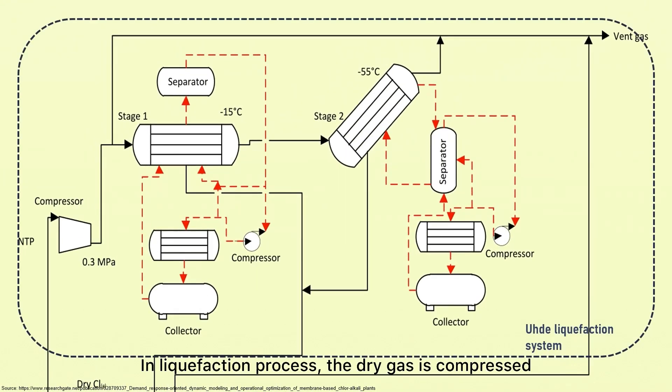In liquefaction process, the dry gas is compressed and cooled using difluoromonochloromethane. It flows from the first horizontal heat exchanger at minus 15 degrees Celsius into the second liquefier, placed at an angle of 60 degrees where it is further cooled to minus 55 degrees Celsius.